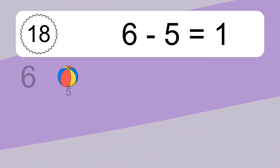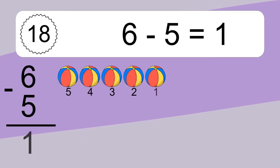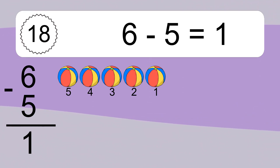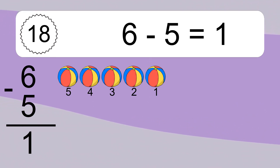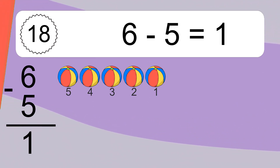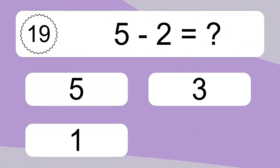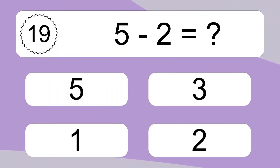6 minus 5 equals what? 6 minus 5 equals 1. Let's count it: 5, 4, 3, 2, 1.